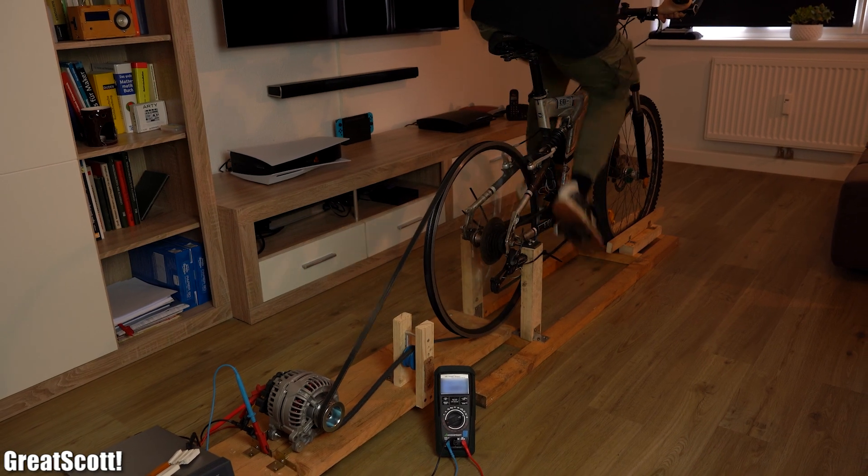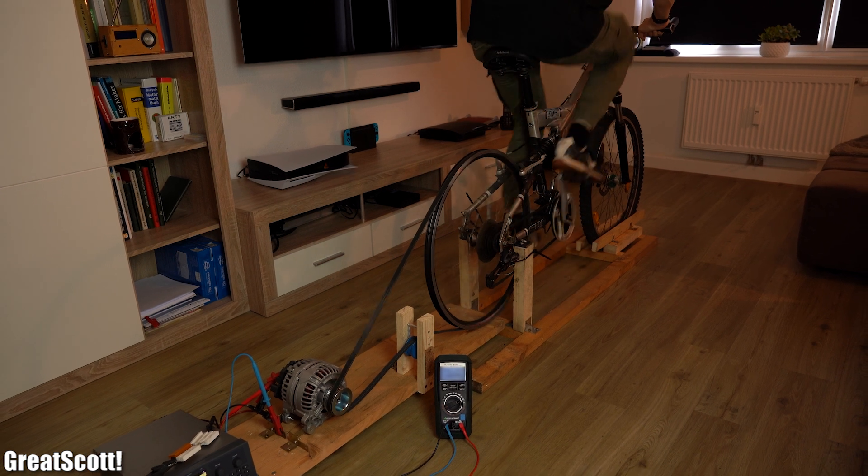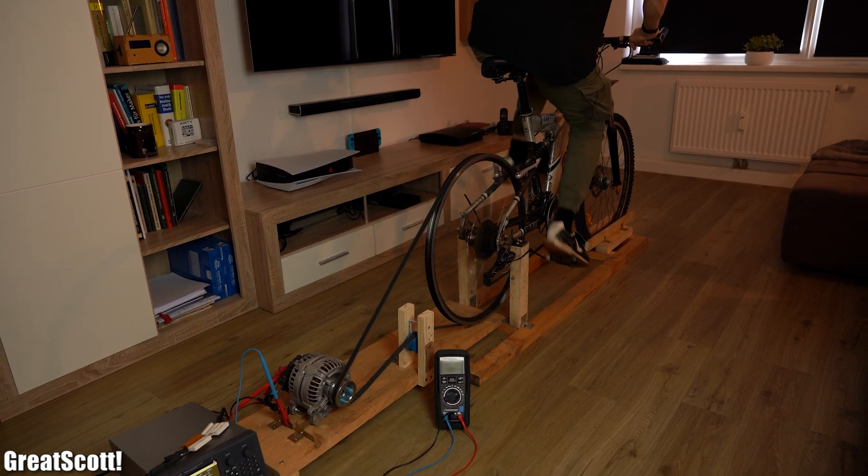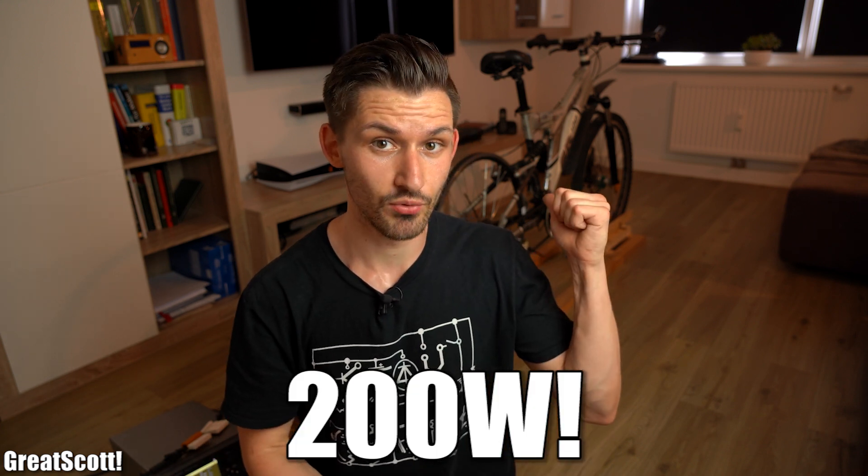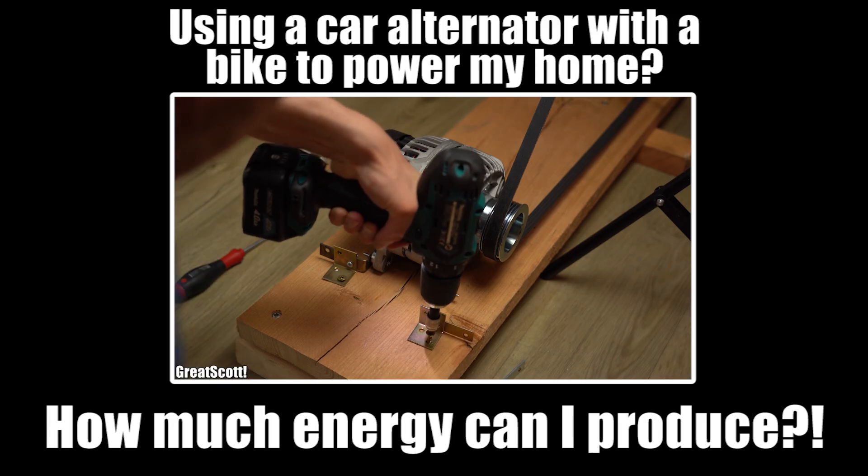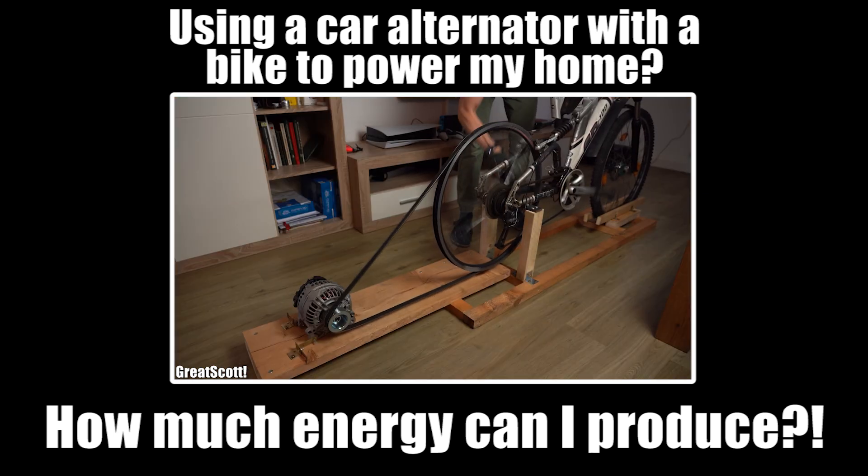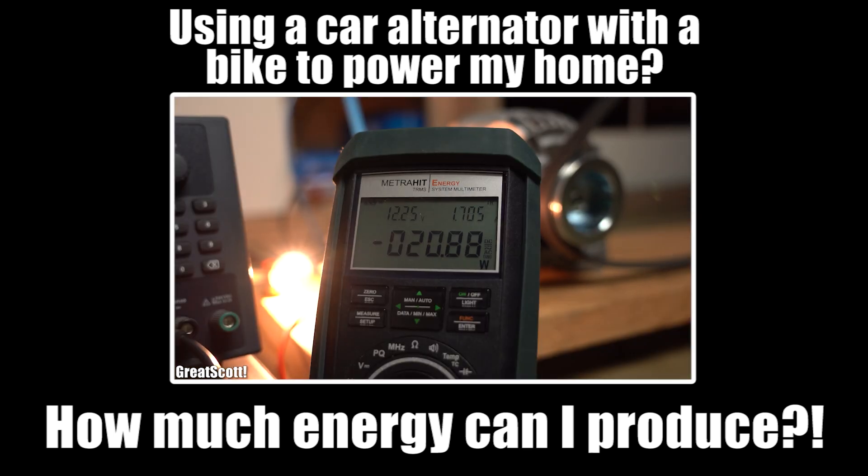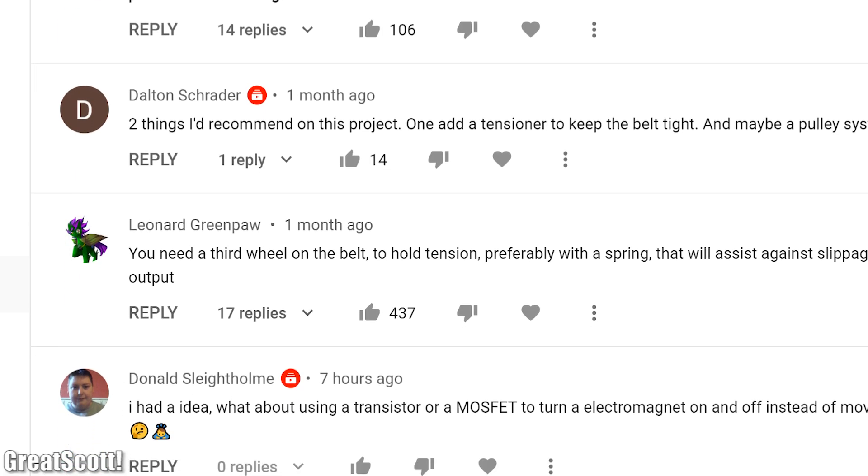I did it! I was able to produce around 200 watts of power with my bicycle generator. I built a bicycle power generator system with a car alternator around two months ago, and back then I only managed to effectively produce around 8 watts. But since there was so much feedback from my viewers with great suggestions on how to improve my system, I thought let's give it a shot.